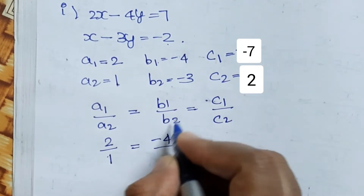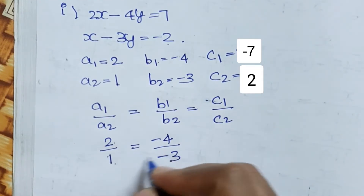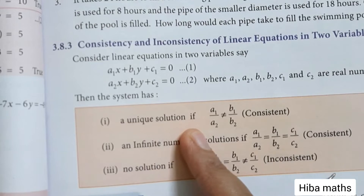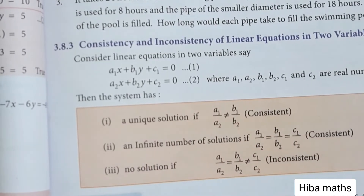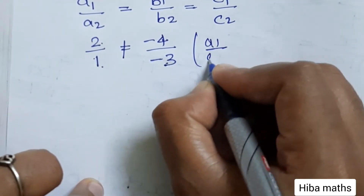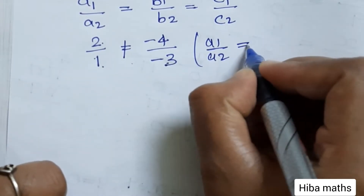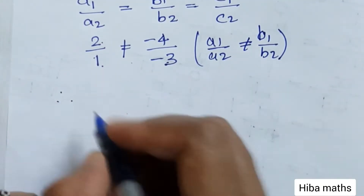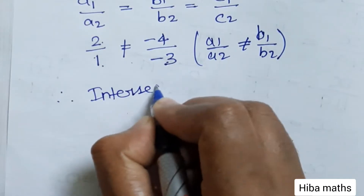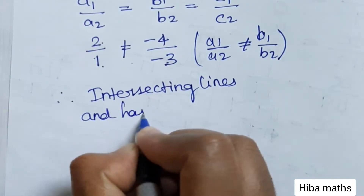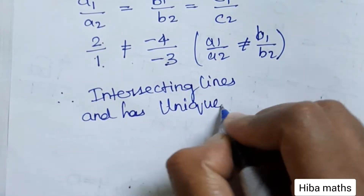B1/B2 equals minus 4 over minus 3. So A1/A2 is not equal to B1/B2. This satisfies the first condition for a unique solution. Since A1/A2 is not equal to B1/B2, these two equations represent intersecting lines and have a unique solution. Therefore the system is consistent.